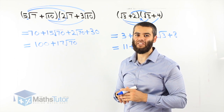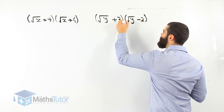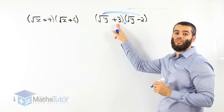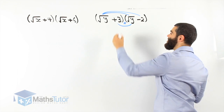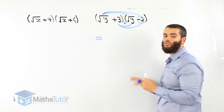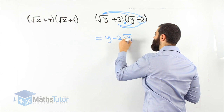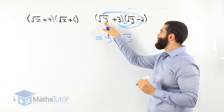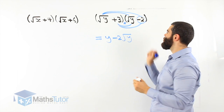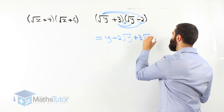Let us now do two more examples. Root y plus 3, times root y minus 2. We know there's a multiplication between each binomial. Root y times root y, root y times negative 2, then 3 times root y and 3 times negative 2. Root y times root y is simply y. Root y times negative 2 is negative 2 root y. 3 times root y is 3 root y. And 3 times negative 2 is negative 6.